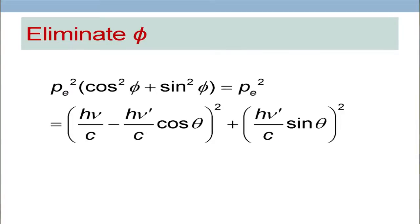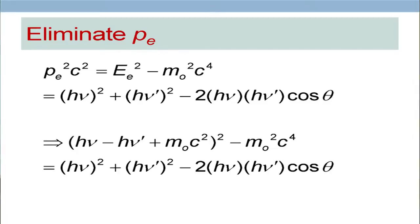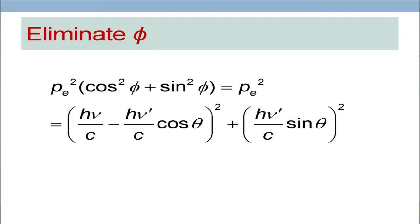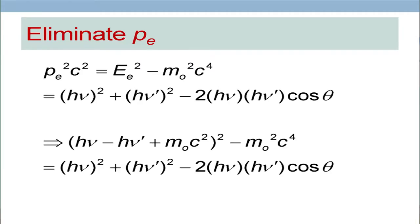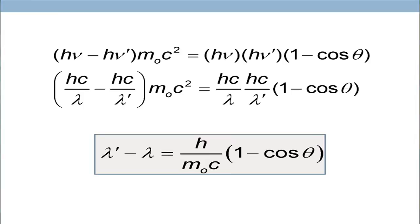After manipulation, we get the result. Using p squared c squared equals E squared minus m0 squared c to the power 4, we substitute and combine with the energy conservation equation. After some mathematical manipulation of these expressions, we finally get the famous Compton effect expression: lambda-prime minus lambda equals h over m0c times (1 minus cosine theta).